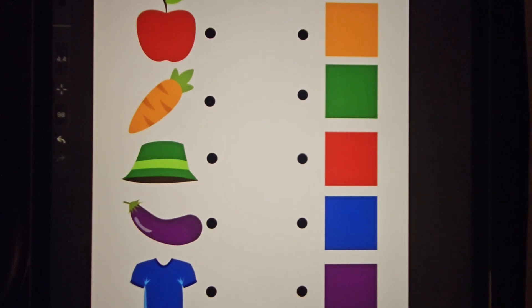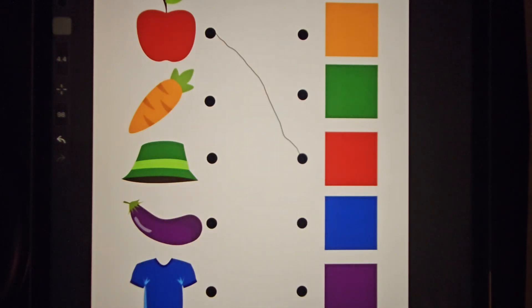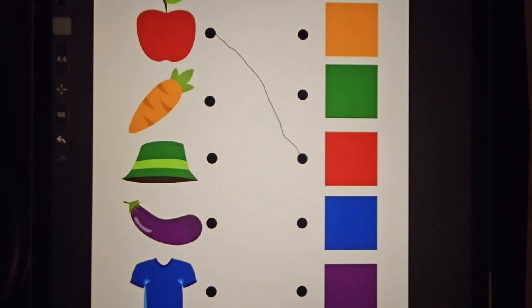We need to match the colors. What is the first one? It's an apple. What color is an apple? Red. The second one is a carrot and that's orange, and that's this color. What even is that thing? What color does it have? Green. I think you're right.